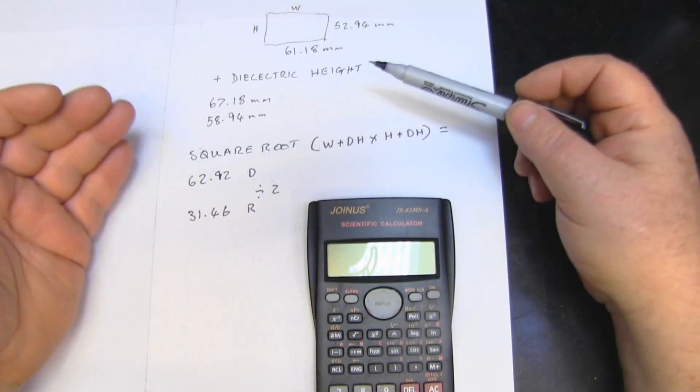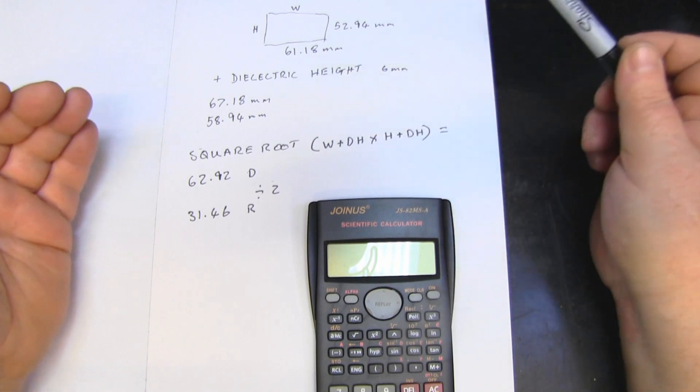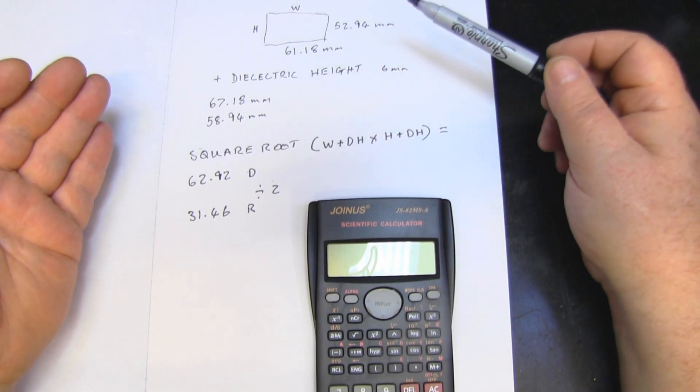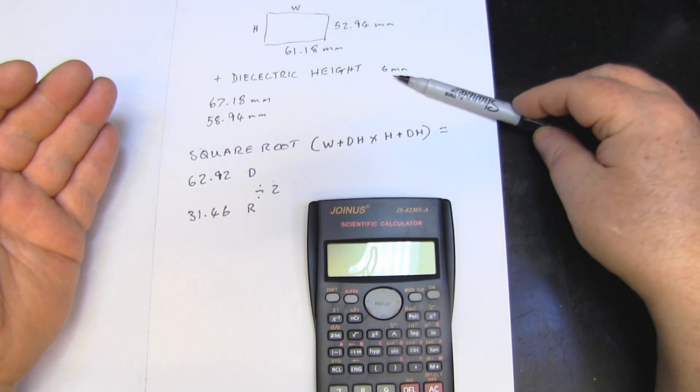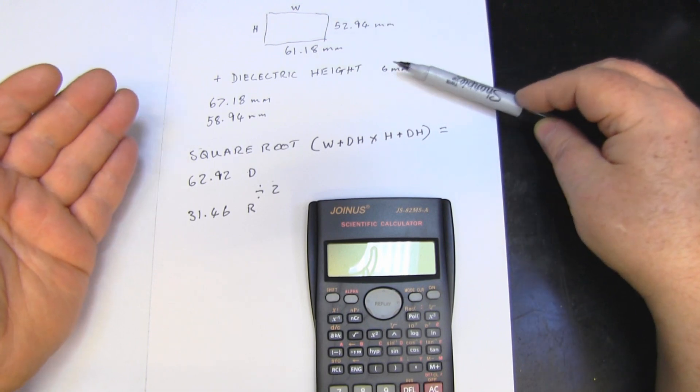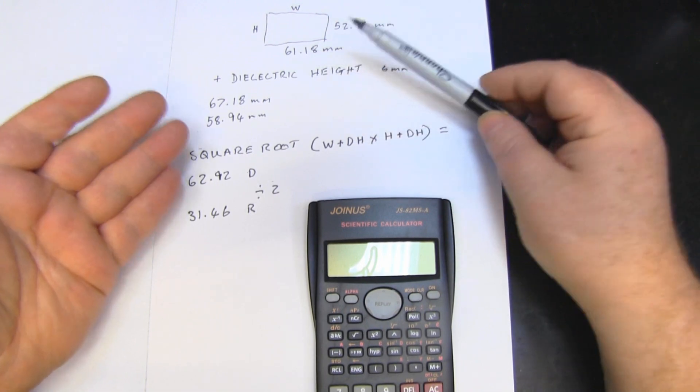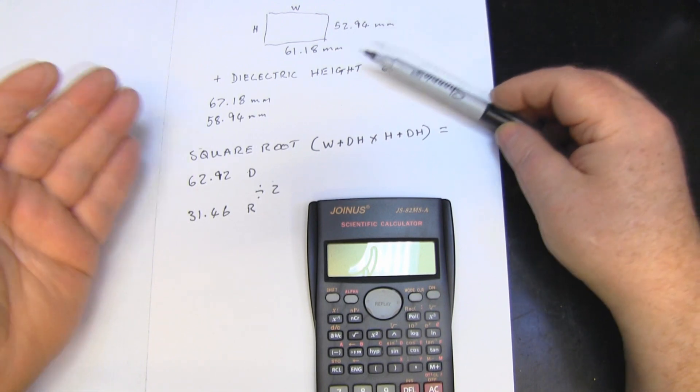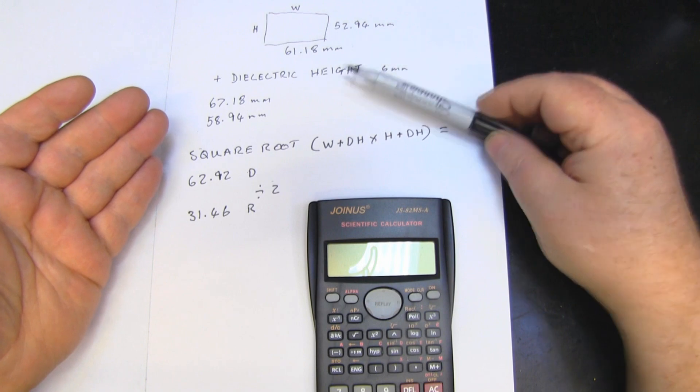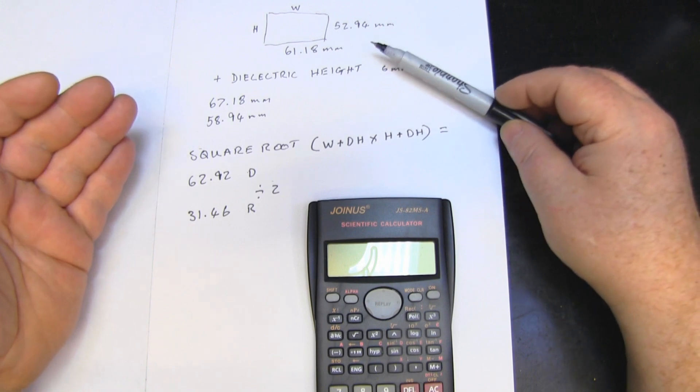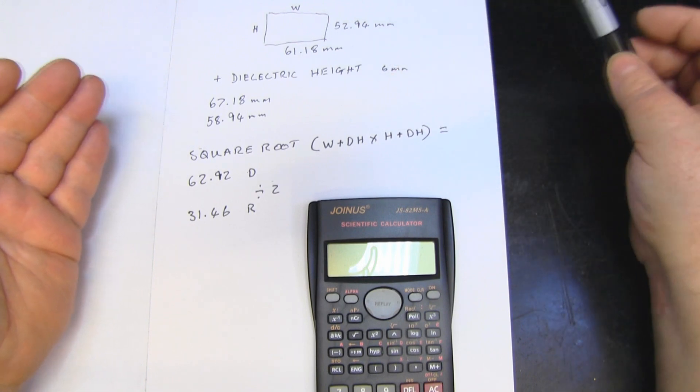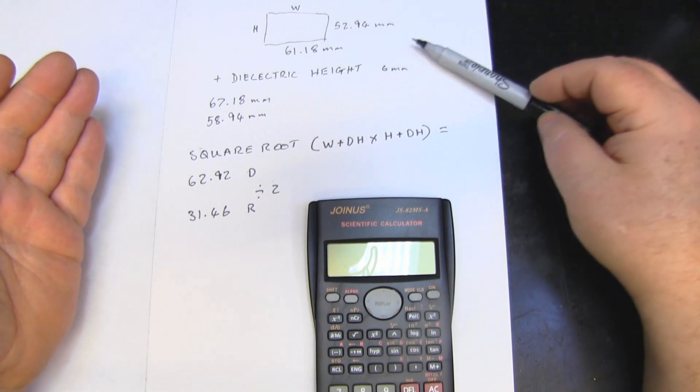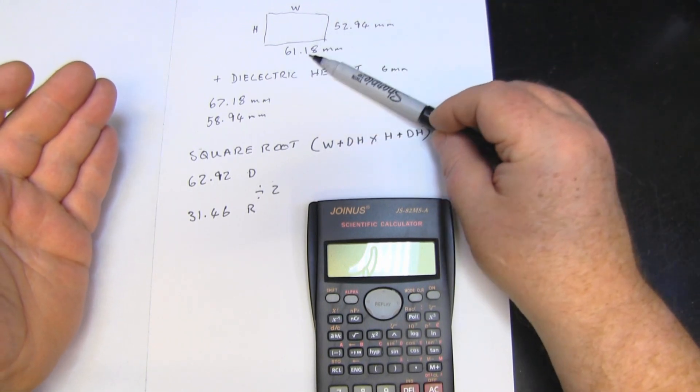So what you've got to do with these figures to get your measurement for your circular patch antenna is add the six millimeter dielectric height. I prefer six millimeters - it's a nice easy distance to make. Those little nylon spacers are six millimeters, so you're making your job a lot easier. You add the six millimeters into each one of these two figures.